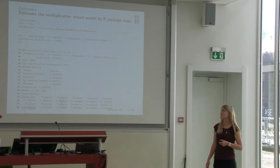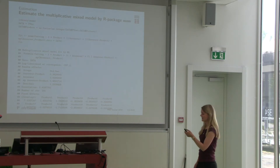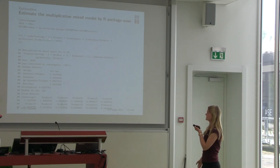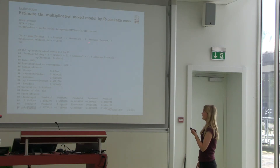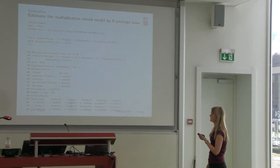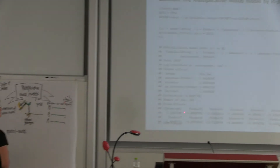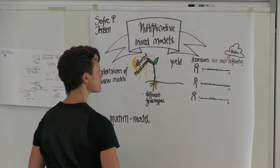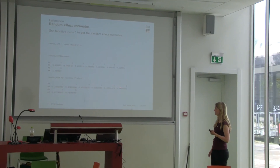So how do we estimate these multiplicative mix models? We do that by using my R package which is called 'mom', which stands for multiplicative mix models. For those of you who work with linear mix models, you will see that the syntax of my package is very similar to the linear case, but then also we have this multiplicative term added. The output here is also very similar to the linear case — we have the estimates of our fixed effects and the estimates of the variance components. We can also find the random effects, here are the assessor effects, and here are the regression slopes.